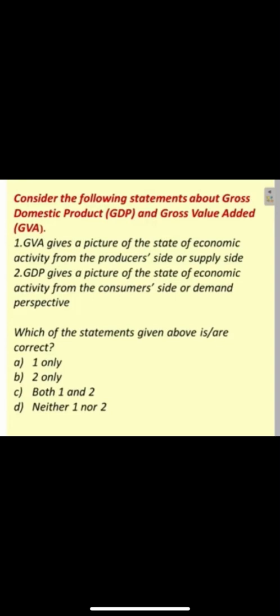Consider the following statement about Gross Domestic Product and Gross Value Added — that is, GDP and GVA. The first option: GVA gives us a full picture of the state of economic activity.